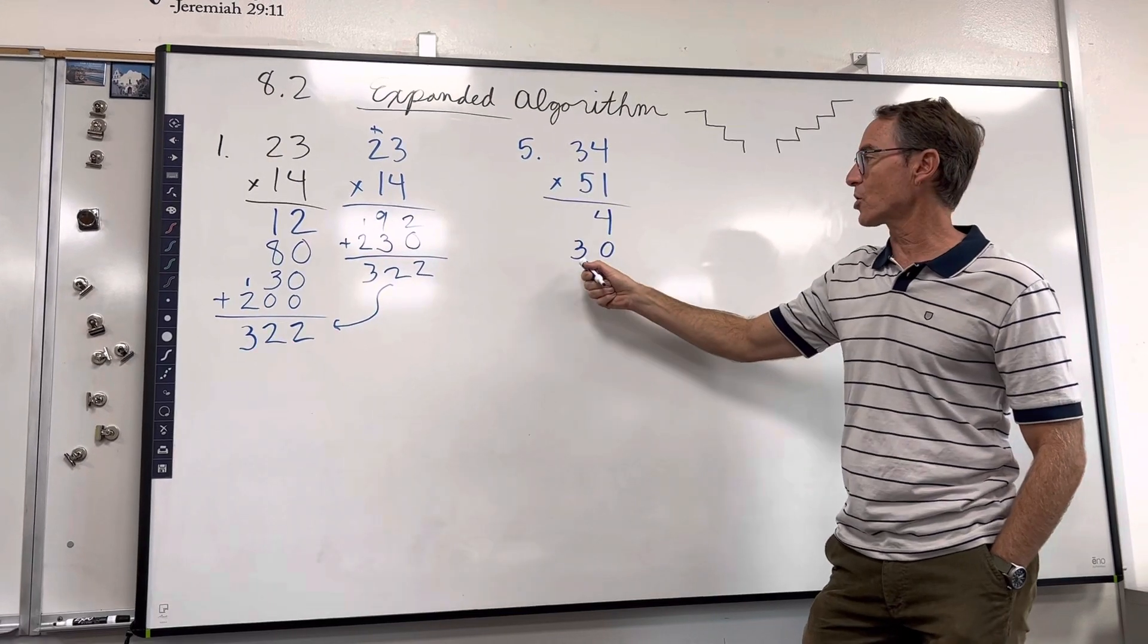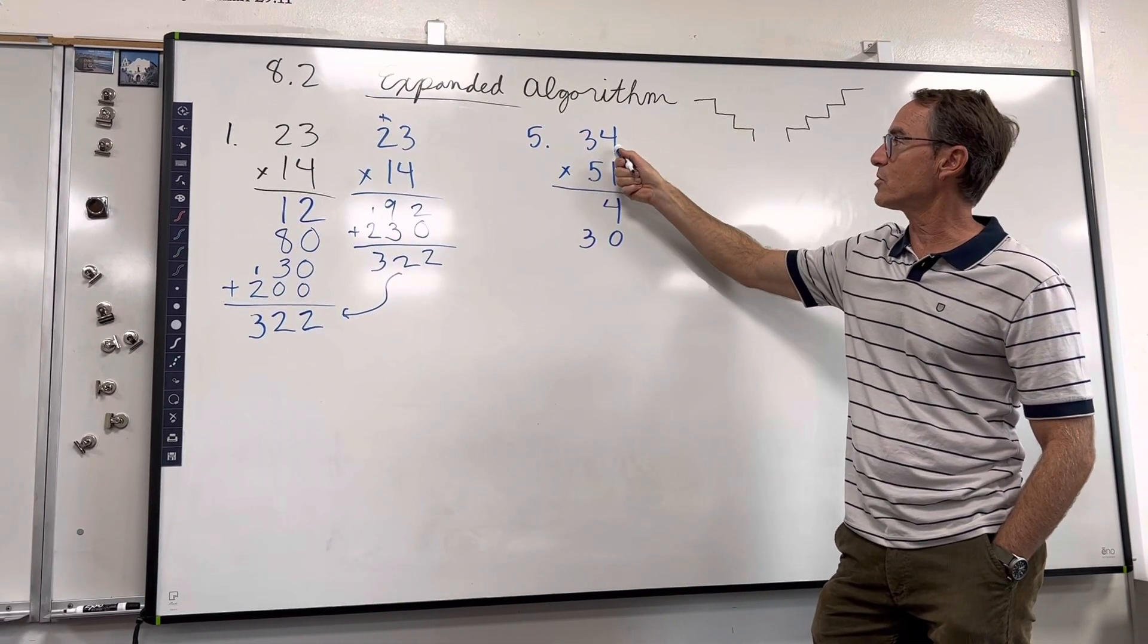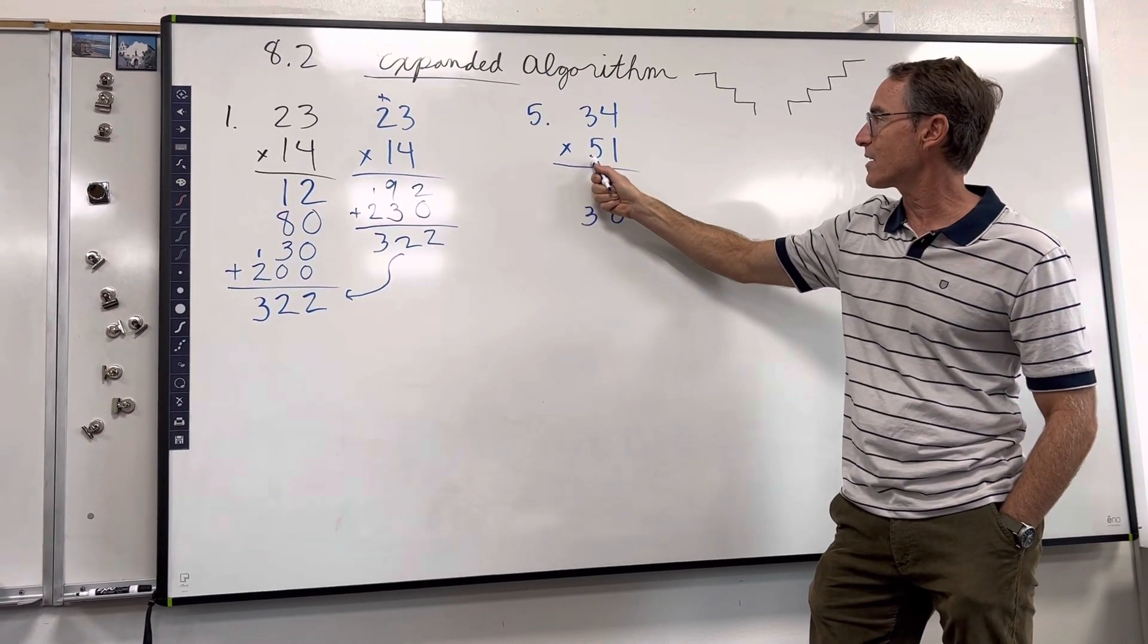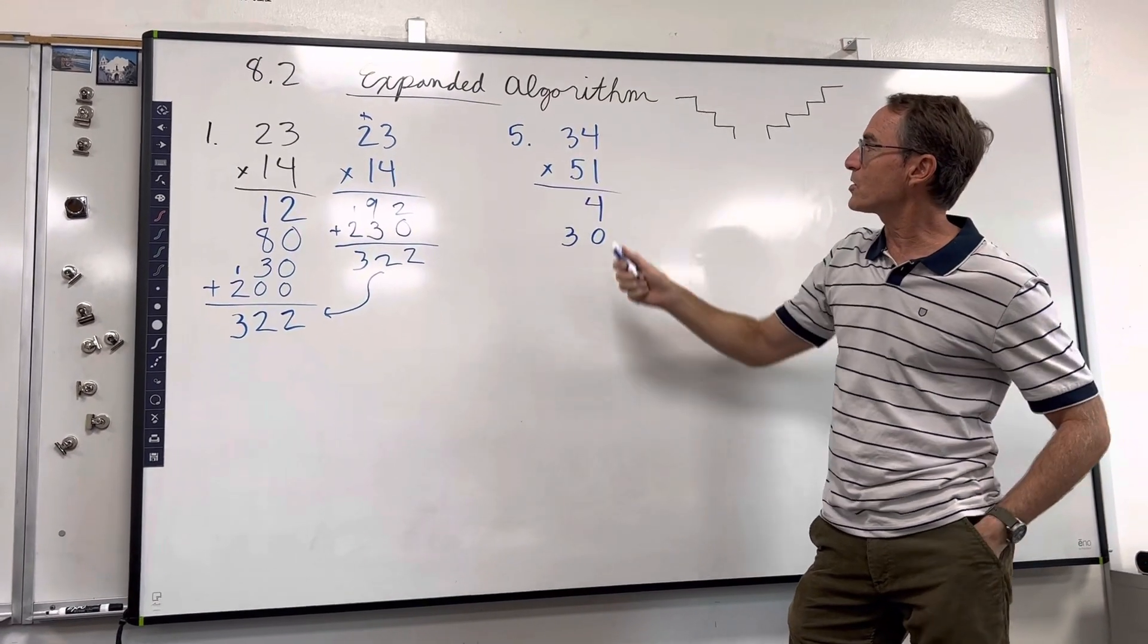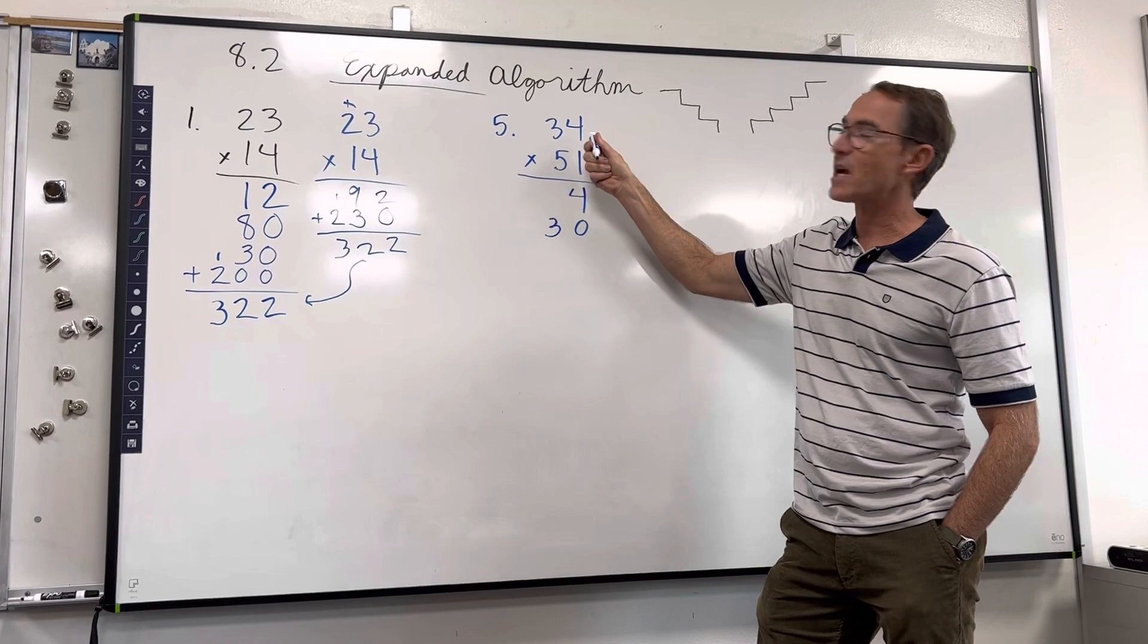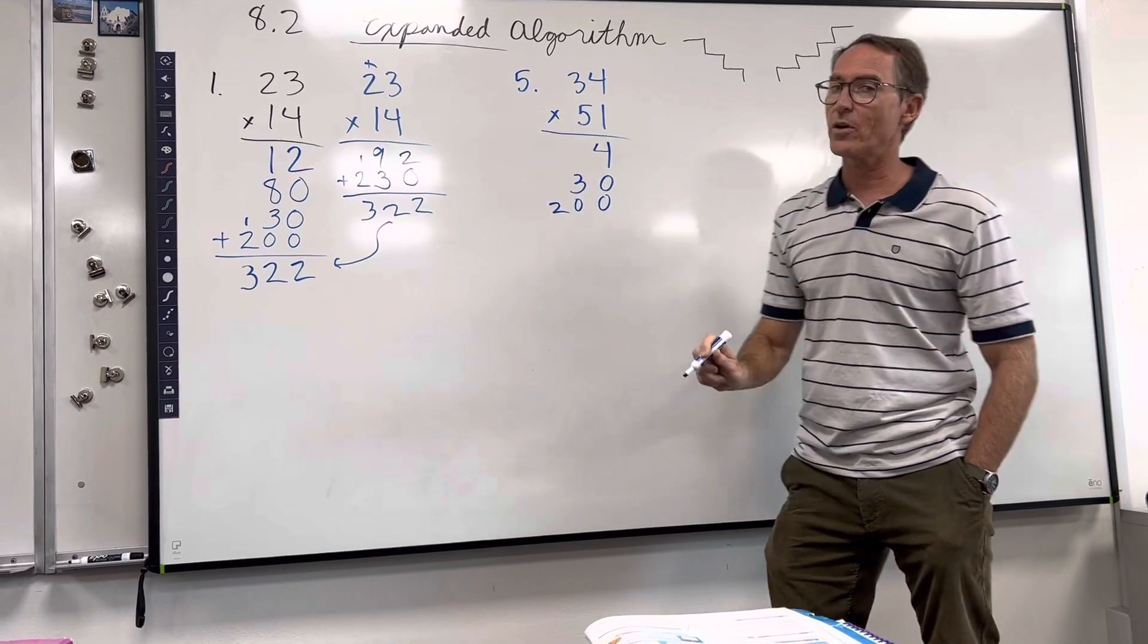So we've got 1 times 4 is 4, and 1 times 30 which is 30. Now the next problem is 5 times 4—we used to say just 5 times 4—but it's not actually a 5. This is a what, class? This is 50 times 4, which gives us what? 50 times 4—5 times 4 is 20, add the zero—200.